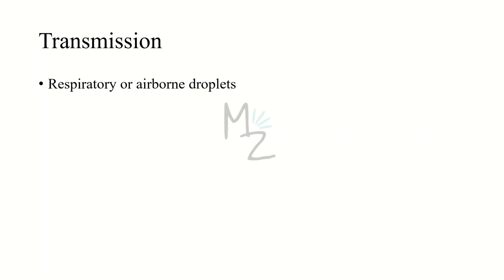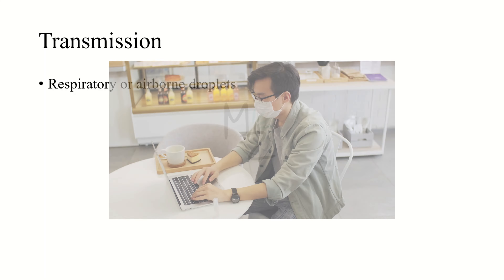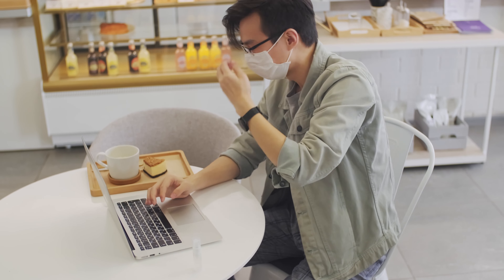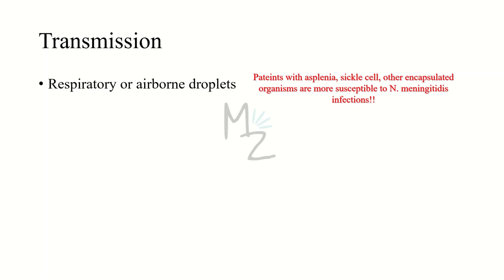Neisseria meningitidis is transmitted via respiratory or airborne droplets like coughing or sneezing. Certain risk factors apply: patients with asplenia — functional or anatomic — patients with sickle cell anemia, or patients having other encapsulated organisms like Haemophilus influenzae or Streptococcus pneumoniae are more susceptible to Neisseria meningitidis infections.